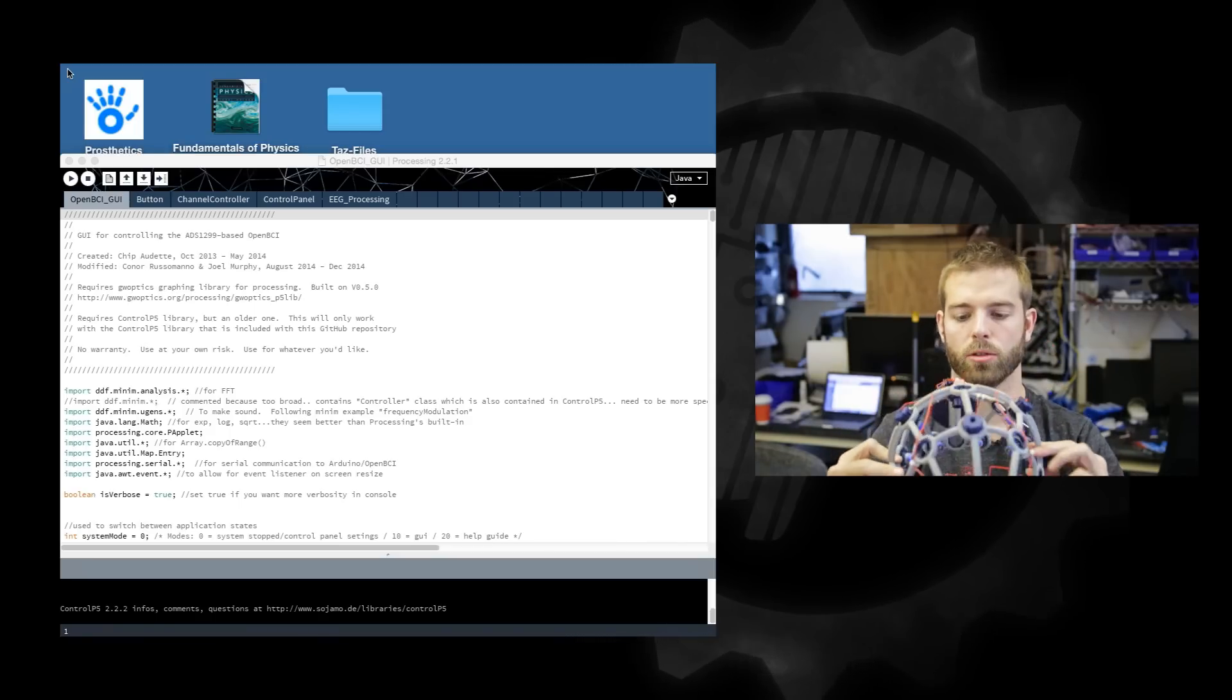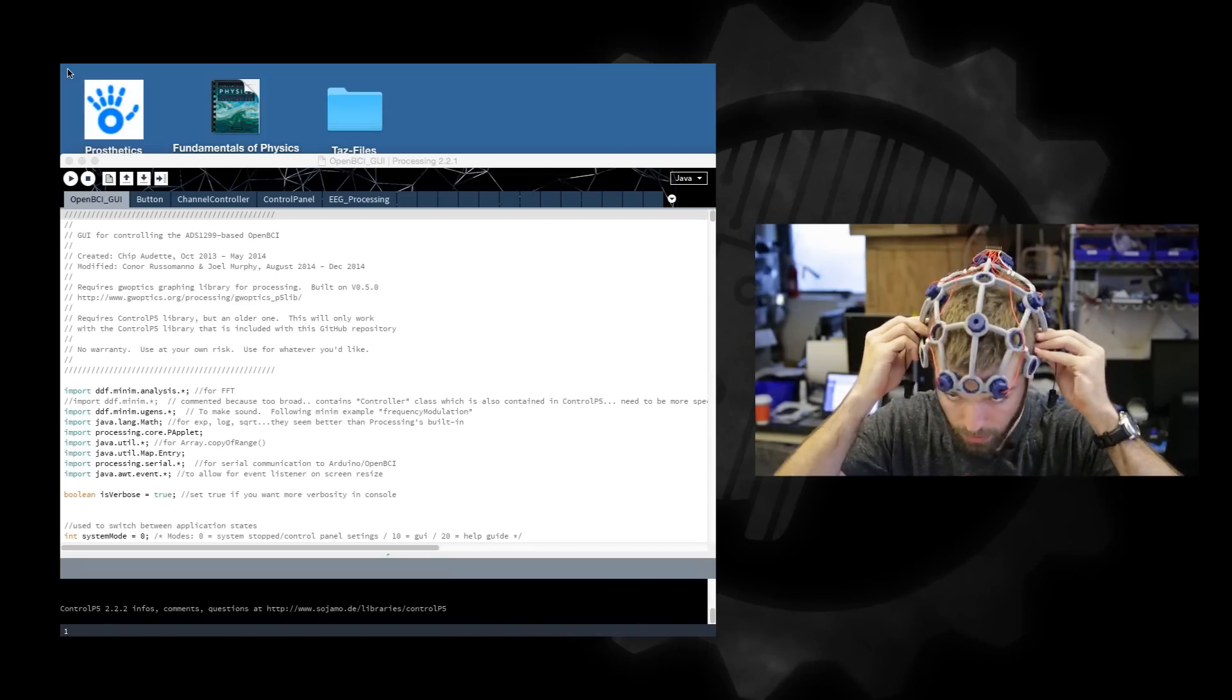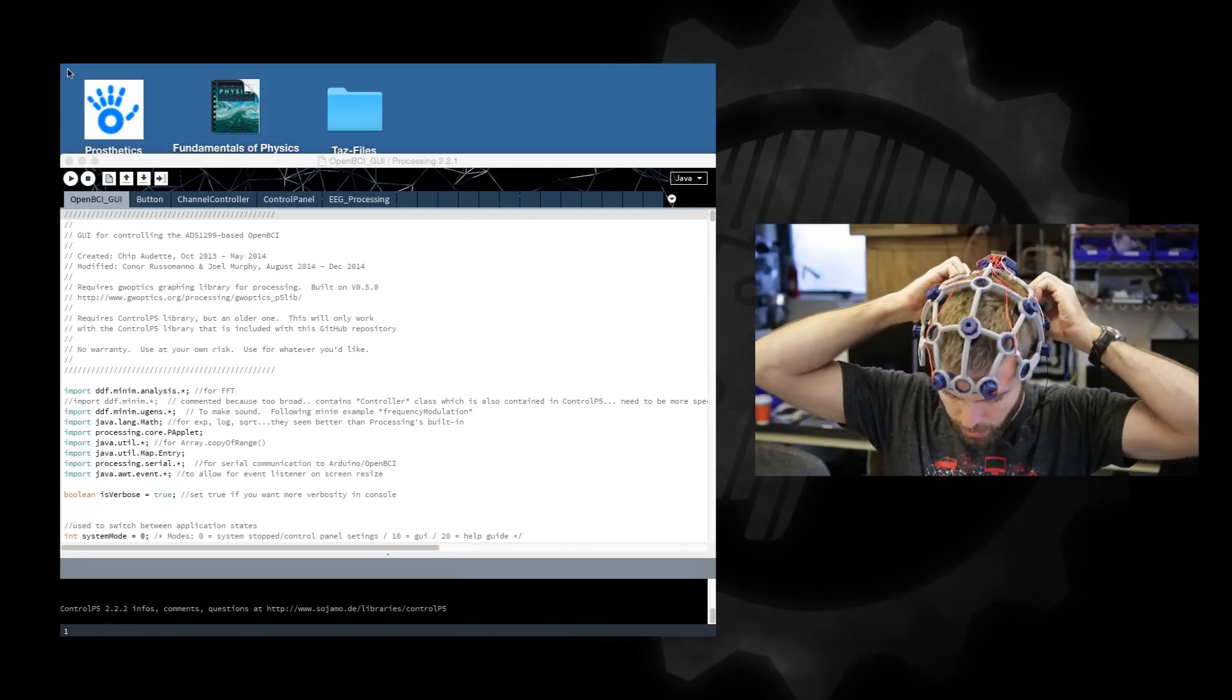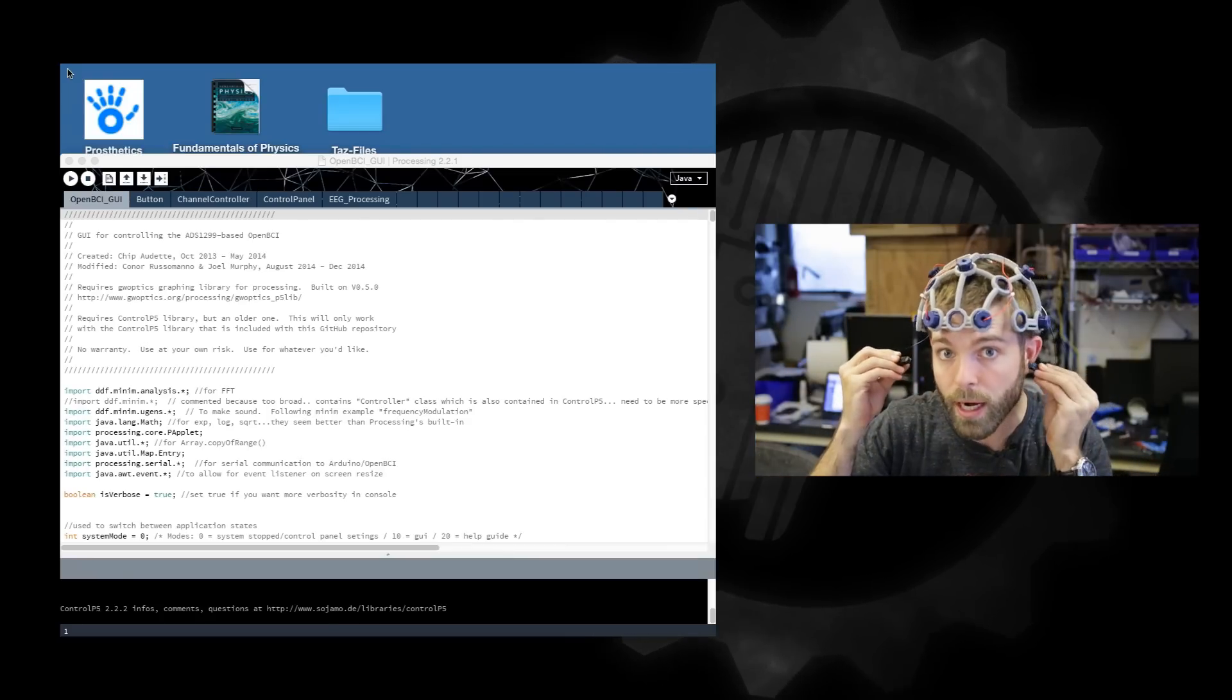So here is my Ultracortex Mark III. It is optimized for my head size and shape. I'm going to put it on, and if it's uncomfortable, I can adjust any of the knobs to make them looser or tighter if need be.